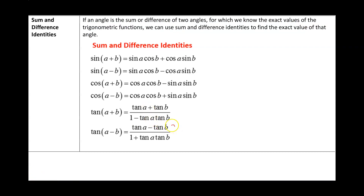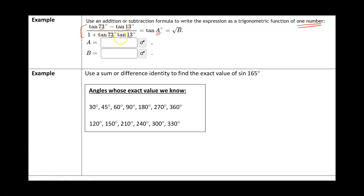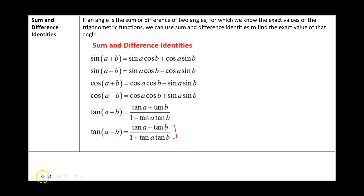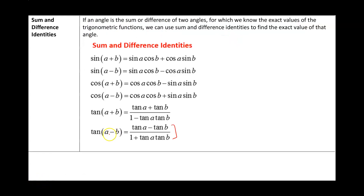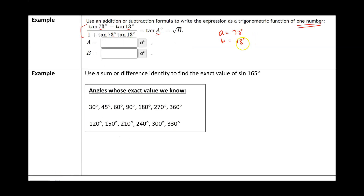We have tangent of A minus tangent of B, and it looks like it fits the tangent difference formula: tangent of A minus tangent of B divided by 1 plus tan A tan B. So small A equals 73 degrees and small B equals 13 degrees. Going back to the formula, this is the formula for tan of A minus B. So this expression equals tan of A minus B, which is tan of 73 minus 13 degrees, which is tangent of 60 degrees.